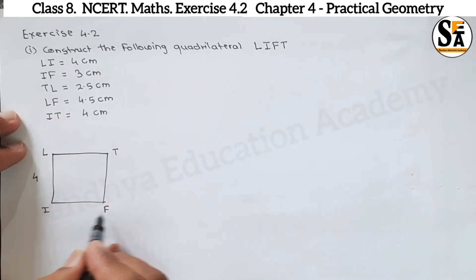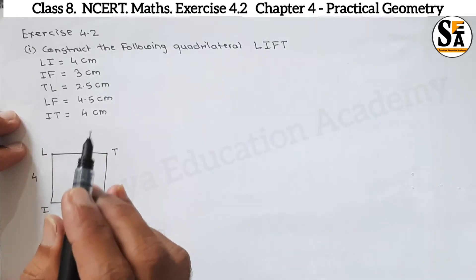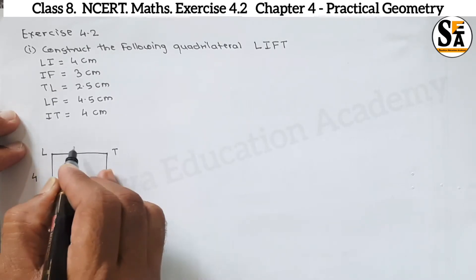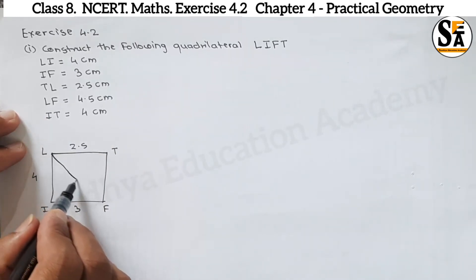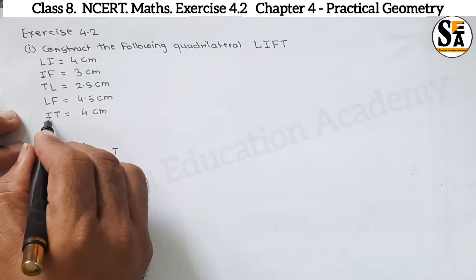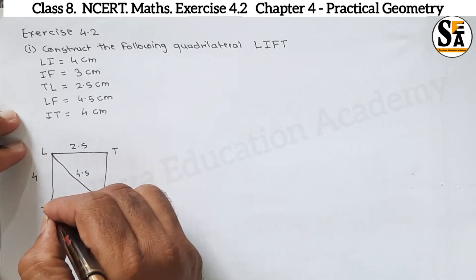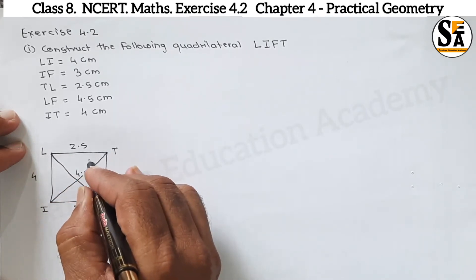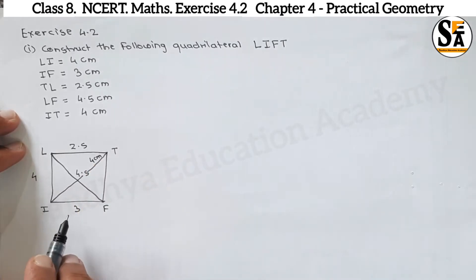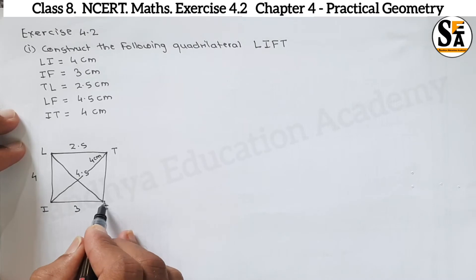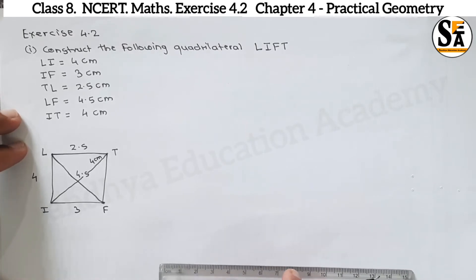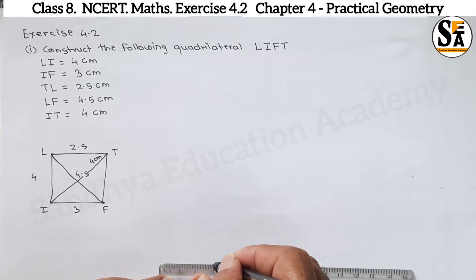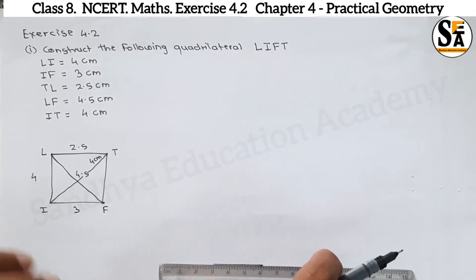LI is given 4 cm, IF is given 3 cm, TL is given 2.5 cm. LF is a diagonal — this diagonal is given 4.5 cm. IT is also a diagonal and that is given 4 cm. All dimensions noted. To start, we will begin with IF, which is 3 cm.